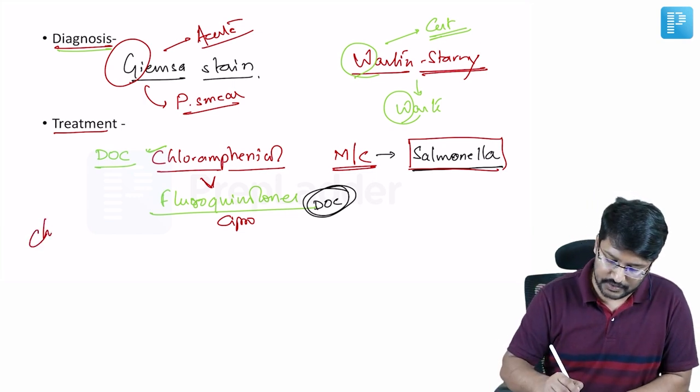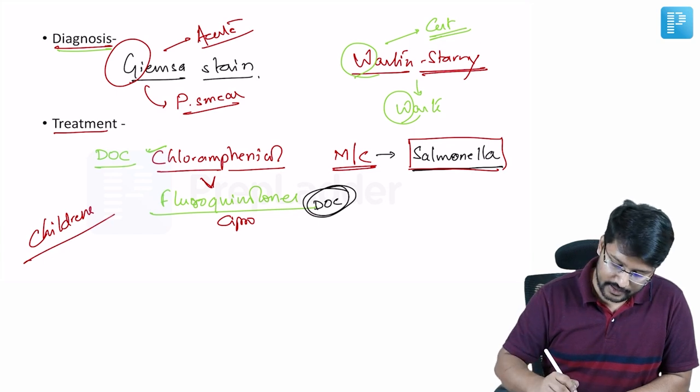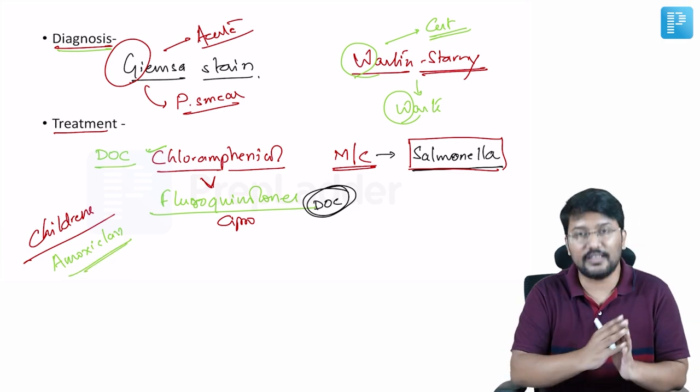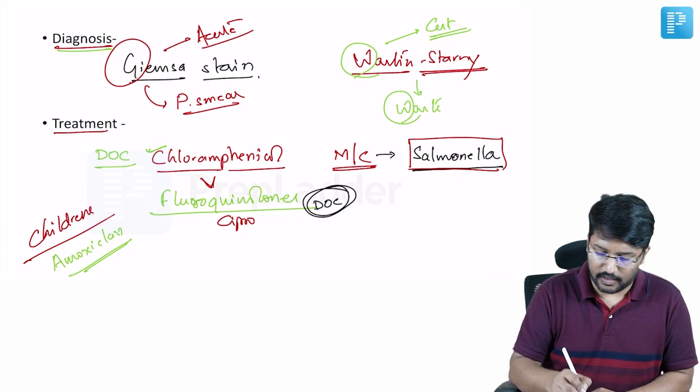Now this is about adults but when it comes to children, when it comes to children often they may add amoxicillin. They may add amoxicillin. For adults it is usually fluoroquinolones that is our drug of choice. This is about acute phase.